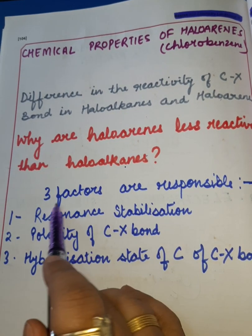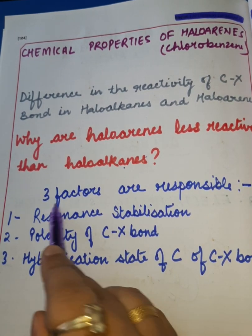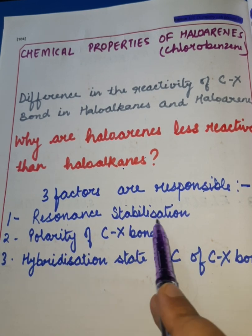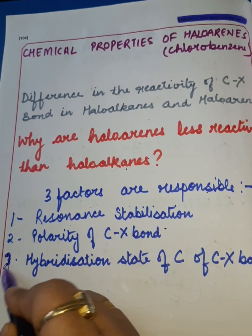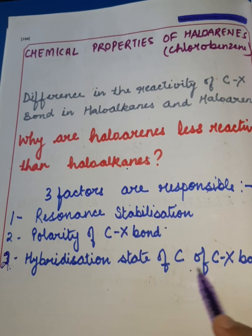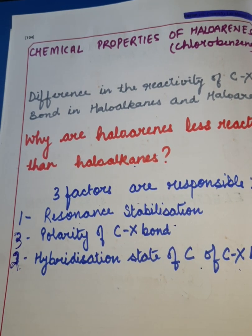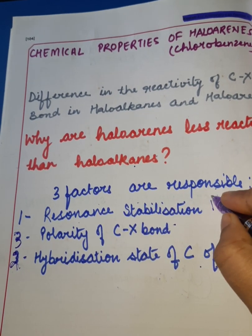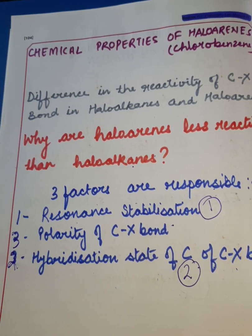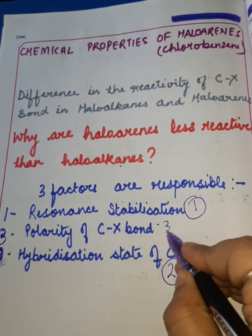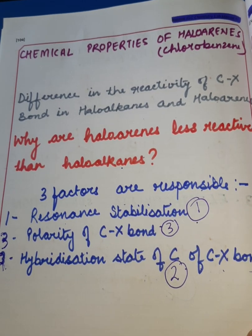There are three factors responsible for this observation. Number one is resonance stabilization. Number two is the hybridization state of the carbon of the C-X bond. And number three is the polarity of the C-X bond. First I will discuss resonance stabilization, then the hybridization state of carbon of the C-X bond, and finally the polarity of the C-X bond.